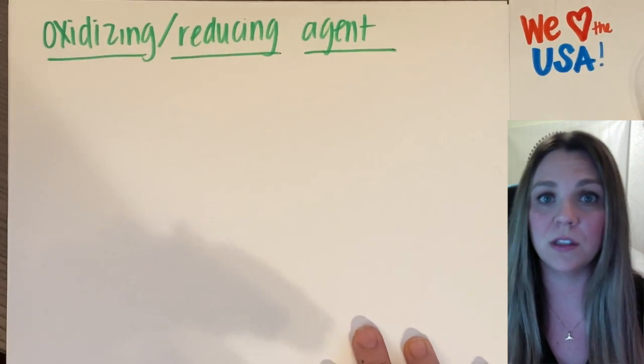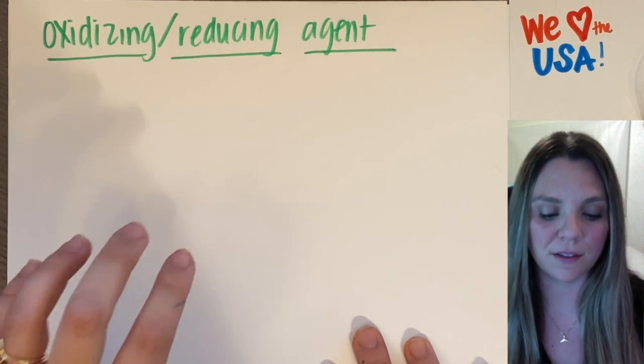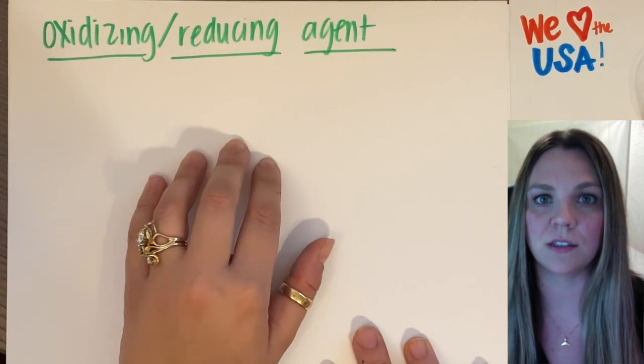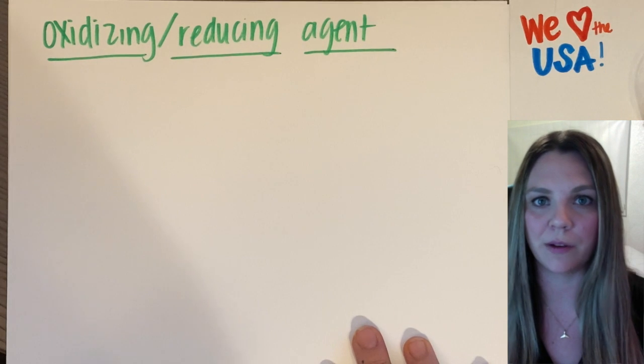In this video, we're just gonna do some examples of practicing finding which is the oxidizing and which is the reducing agent. Four examples. Here we go.